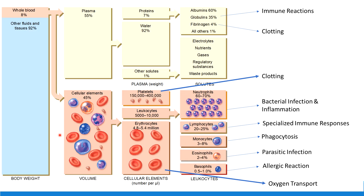Remember that when we look at blood, it is composed both of plasma, which is the fluid, and the formed elements, which are the types of blood cells. Inside plasma, what we mostly have is water. Remember that water is really good at absorbing heat, and it helps to balance your body temperature.